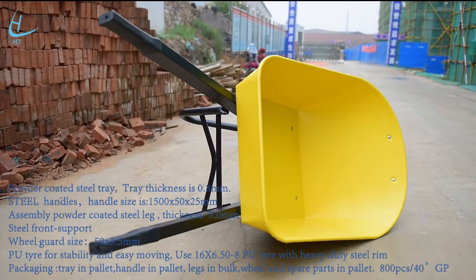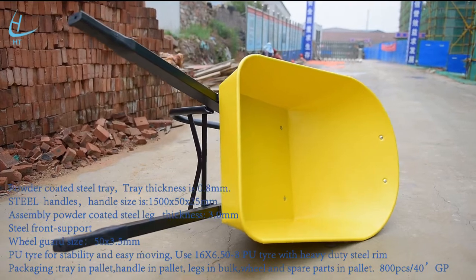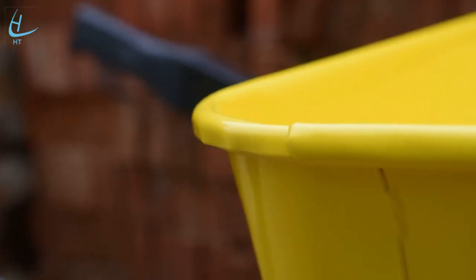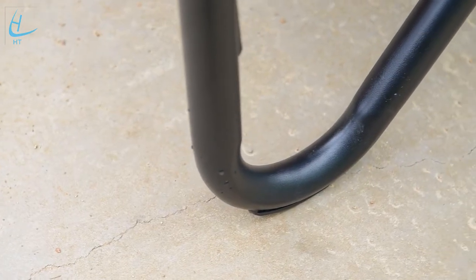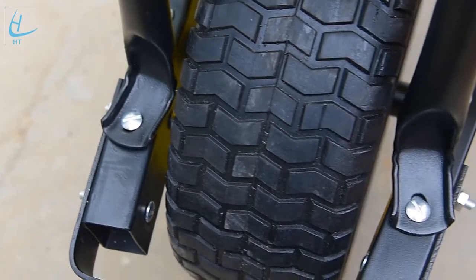WB6024A, the 100L industrial steel tub wheelbarrow, is a general purpose and trade or builders wheelbarrow with PU tire for easy moving when loaded.